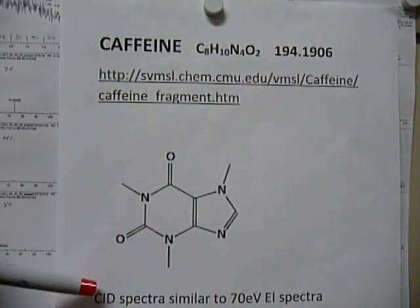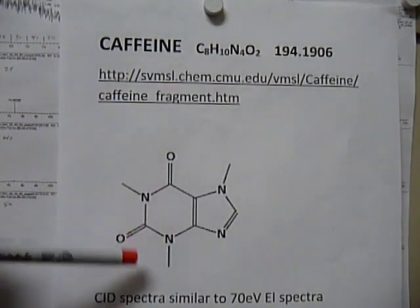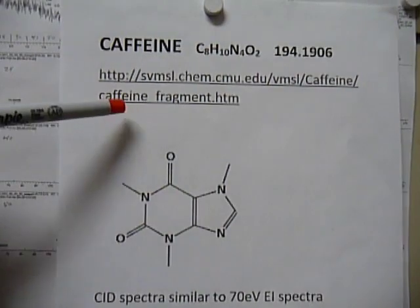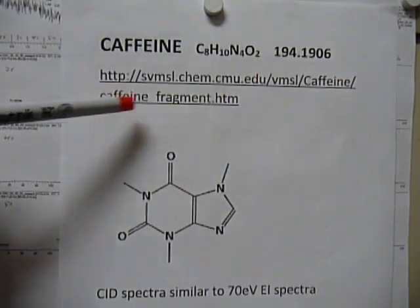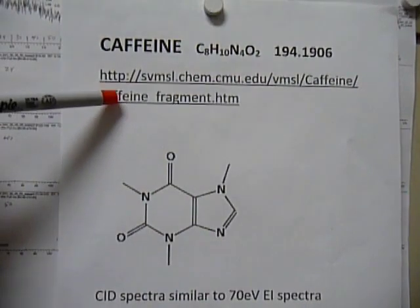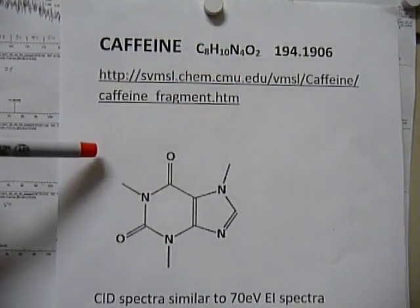These CID spectra for caffeine are pretty similar to the 70 EV EI spectra. There's a website that goes into the fragmentation of caffeine. The link is in the show more.